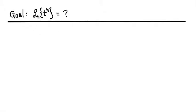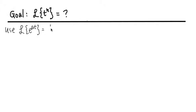We are going to figure out what's the Laplace transform of t to the n power, and this is how we are going to do it. We are going to use the fact that the Laplace of e to the a t power is the same as 1 over s minus a, and we must make sure that s is greater than a in order for this to work.